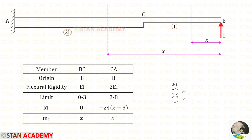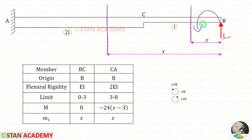Now we are going to find the moment m1. For that, in the direction of RB, we have to apply a unit load. Let us find m1 in BC and CA. Up to both sections, we have only the unit load. About both sections, it is acting in the anticlockwise direction, so it will be positive.